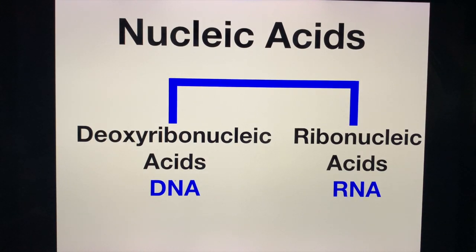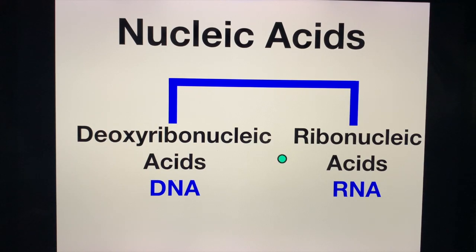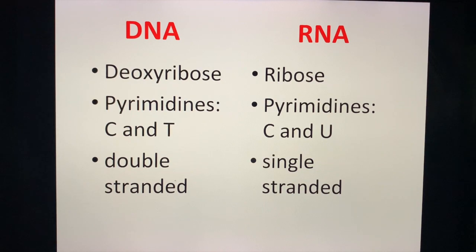Let's have a quick overview regarding the concept of nucleic acids. We have two types of nucleic acids: DNA, which is deoxyribonucleic acid, and RNA, which is ribonucleic acid. These are the key properties we need to know regarding DNA and RNA, and what the differences are.